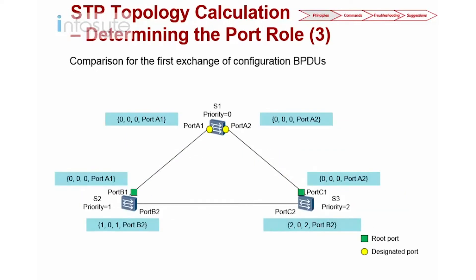Once the BPDUs have been exchanged and settled down, you notice that S1 has the lowest priority number. The lowest priority number means you have the highest priority. Since S1 has the highest priority, the S1 BPDU is overriding port B1, so port B1 now has a configuration BPDU of 0, 0, 0. The same applies to port C1. On Switch 2, the root priority is 1, with a root cost of 0 and a bridge ID of 1. The same applies on Switch 3.